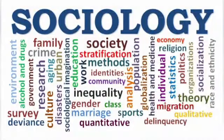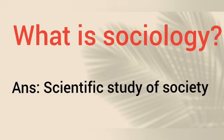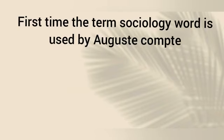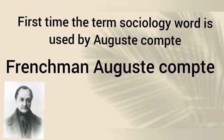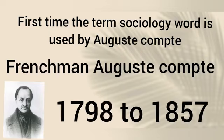Our first topic is: what is Sociology? Do you know what is Sociology? The scientific study of society is called Sociology. The first social scientist to use the term Sociology was a Frenchman by the name of Auguste Comte, who lived from 1798 to 1857.